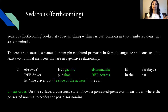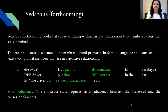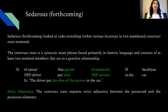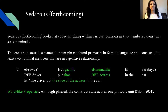The first property is linear order: a construct state nominal follows a possessed-possessor linear order, with the possessed nominal linearly preceding the possessor phrase. Second is strict adjacency: construct states require strict adjacency between the possessed and possessor elements — no prepositions or adjectives can intervene. Third are word-like properties: although the construct state is a productive phrase, it acts as one prosodic unit and has word-like properties.